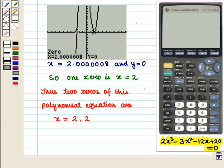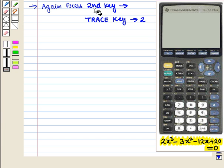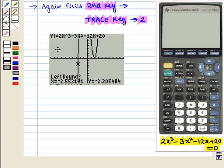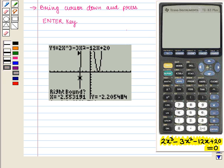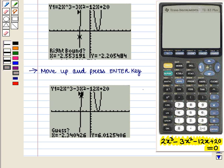Similarly we can find the other zero. Again we press SECOND key followed by TRACE key and then number 2 key. We will get the following display. Then we bring the cursor down and we press ENTER key. We get the following display. Now it asks for right bound. So we move up and press ENTER key. Now we get guess on screen and again we press ENTER key.